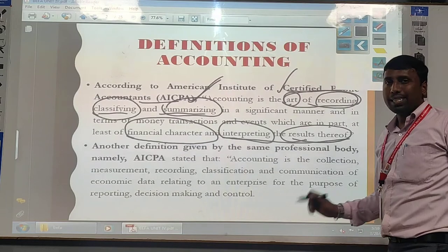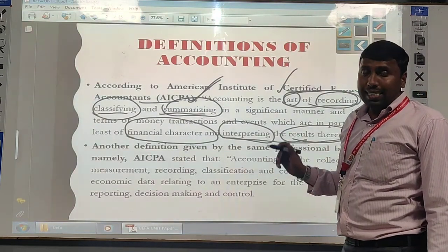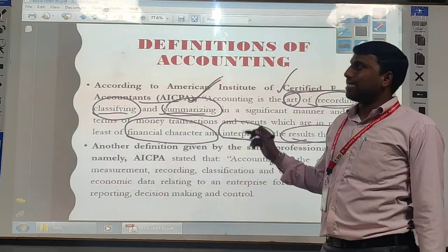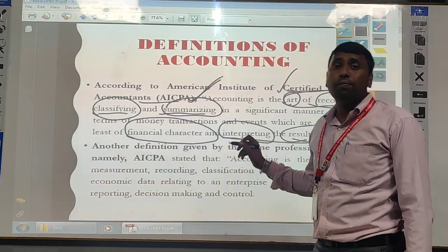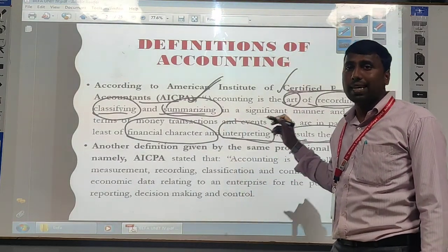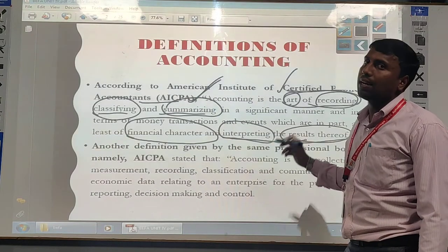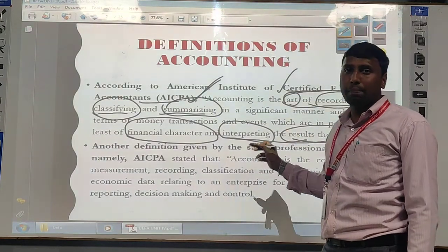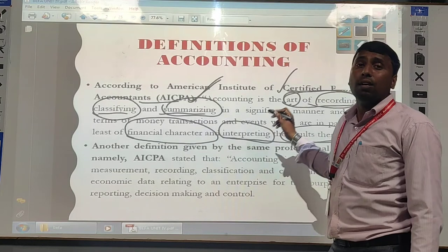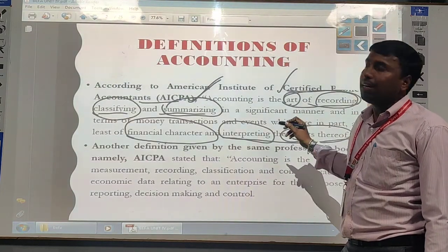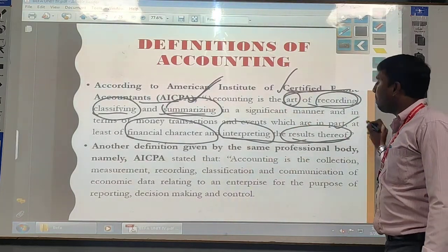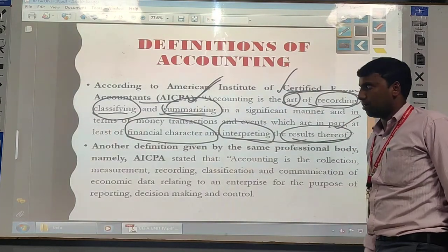So simply, accounting is the art of recording, classifying and summarizing. And based on that, we are finding the end results of that particular account — either we are getting a profit or loss, or what is the financial position of the company. And based on those results, we communicate to the required parties — that is called as accounting.